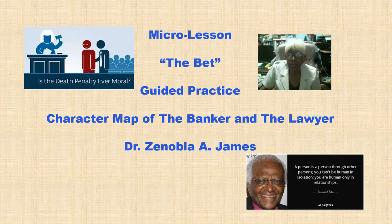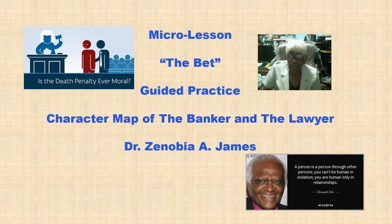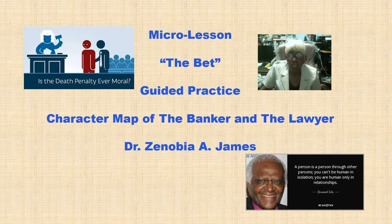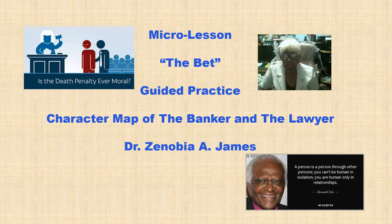Okay, this is a micro lesson — part of a larger lesson, class — and this is the guided practice portion. We're going to be working with a character map of the banker and of the lawyer. We're also dealing with certain environmental issues like isolation, and there's an argument about whether the death penalty is ever moral.